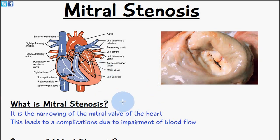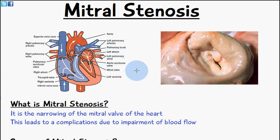When the mitral valve is thickened and the passage is narrowed, it leads to complications due to impairment of blood flow. There will be an accumulation of blood in the left atrium because less blood can pass through into the left ventricle. This means there's an increase in atrial pressure in the left atrium, and because there's more blood there, there'll also be an increase in pressure in the pulmonary vein. The overall effect of mitral stenosis is an increase in pulmonary pressure and left atrial pressure.